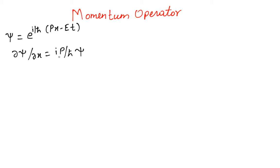You see this is nothing but an eigenvalue problem where del over del x is an operator and it gives us an eigenvalue p and we get back the wave function psi. We can rearrange this to get p equals minus i h bar del over del x. So this is an operator, when it acts on a wave function, it gives the momentum of the particle.